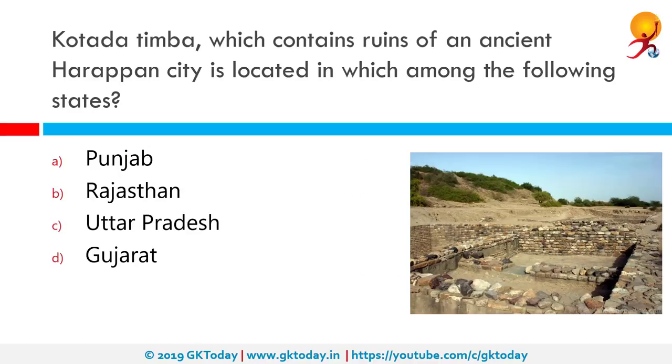Kotiratimba, which contains ruins of an ancient Harappan city, is located in which among the following states?